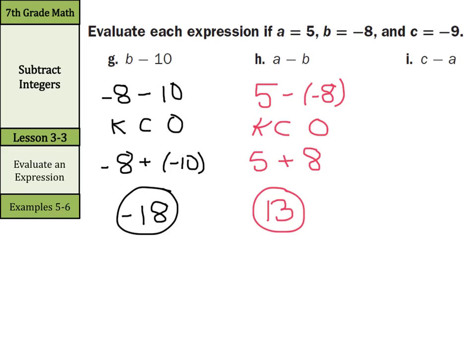For C minus A where C equals negative 9 and A equals 5: substitute to get negative 9 minus 5. Keep change opposite: keep the negative 9, change subtraction to addition, the opposite of 5 is negative 5. Same signs — both negative — so 9 plus 5 is 14, keep it negative: negative 14.